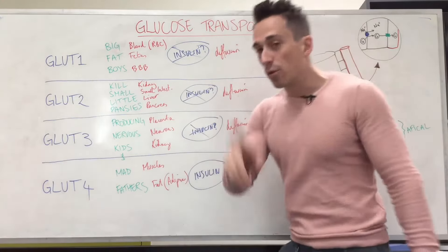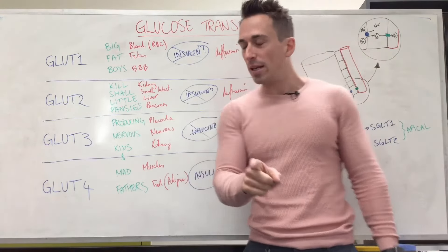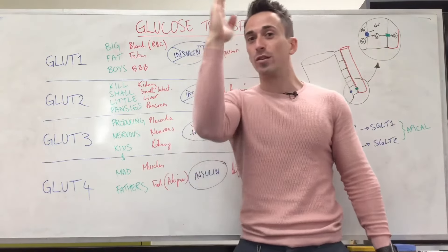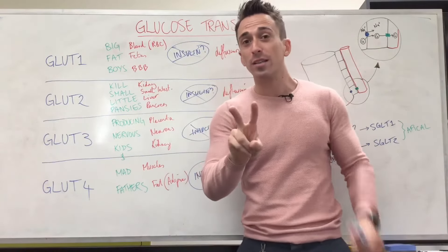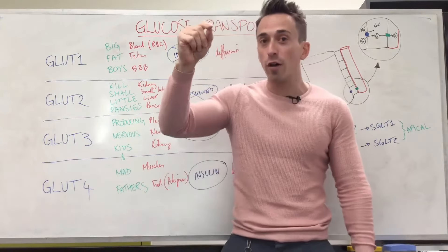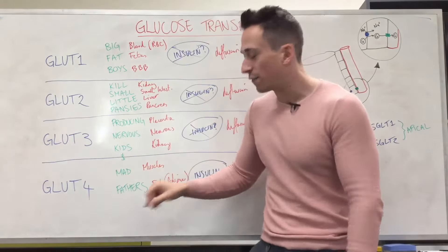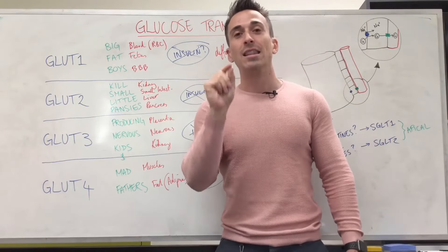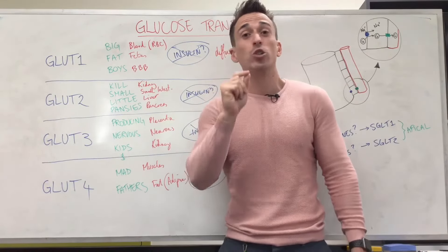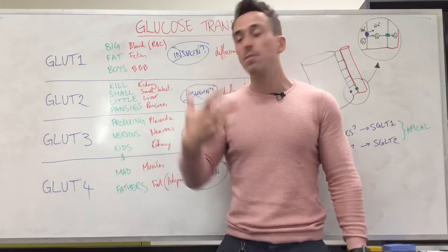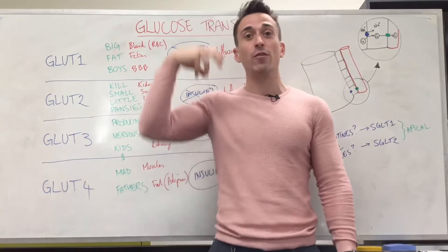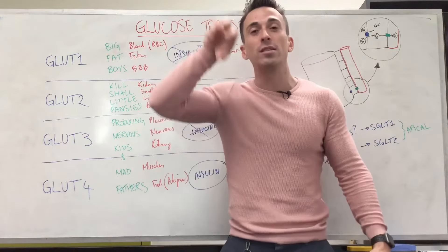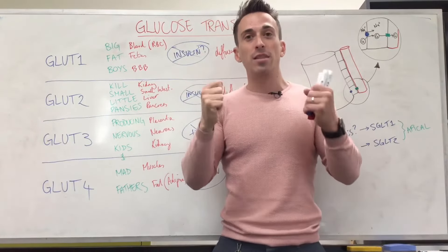Another important point, especially for diabetes, is that exercise also induces GLUT-4 to move to the surface. Two things can bring GLUT-4 receptors to the surface of muscle and fat cells: one, insulin; two, exercise. This is one important reason why diabetics should exercise — it stimulates the amount of GLUT-4 receptors on the surface, increasing the amount of glucose that can get into the cells of the body so they can function.